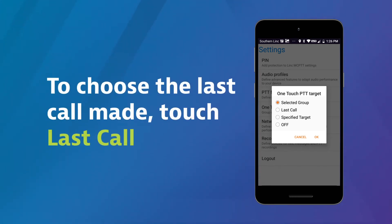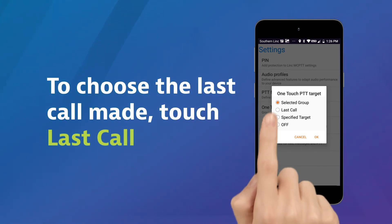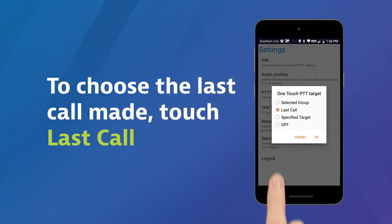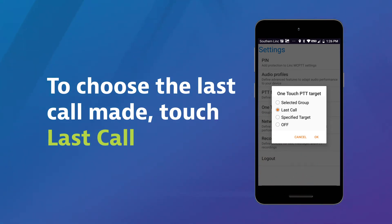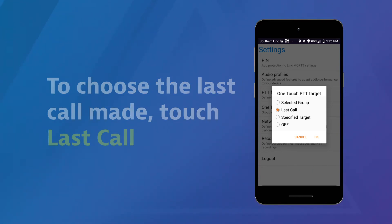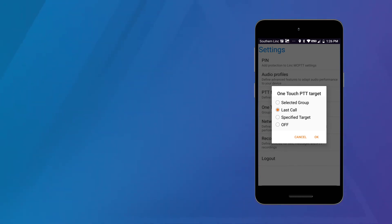To select the last call made, touch Last Call. The radio button will turn orange. Touch OK to save your setting, or Cancel to return to the prior screen.